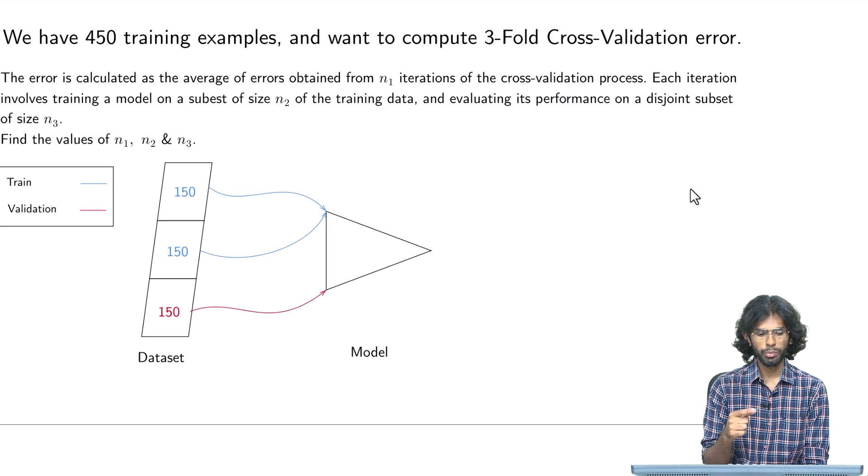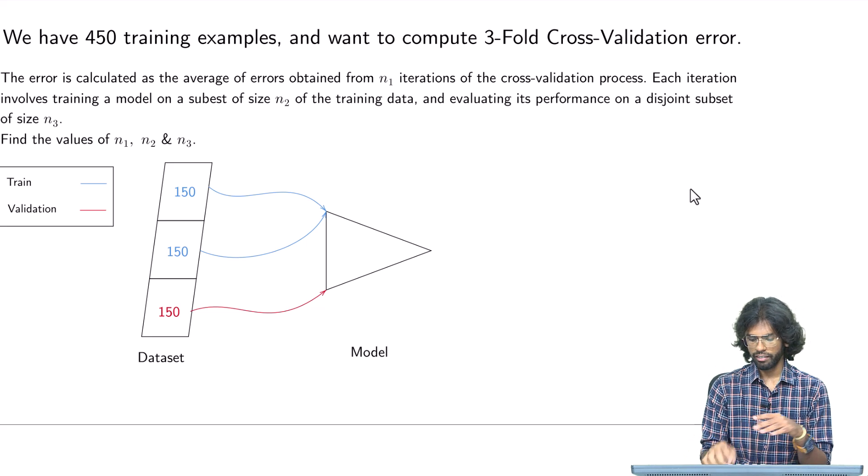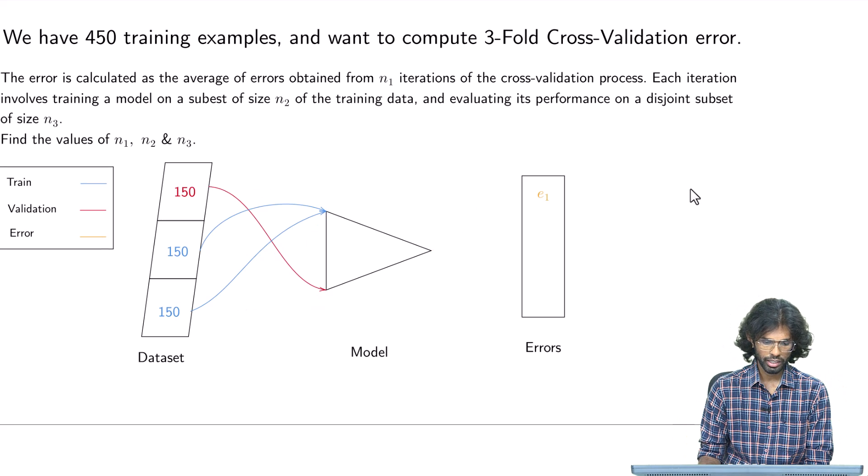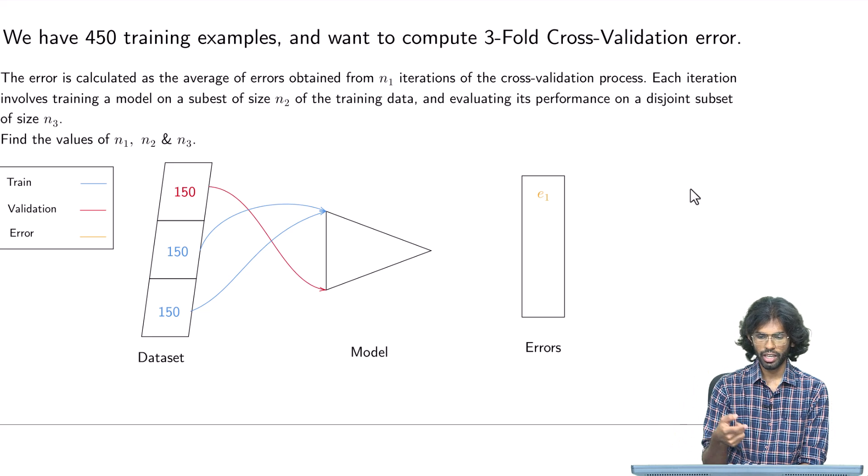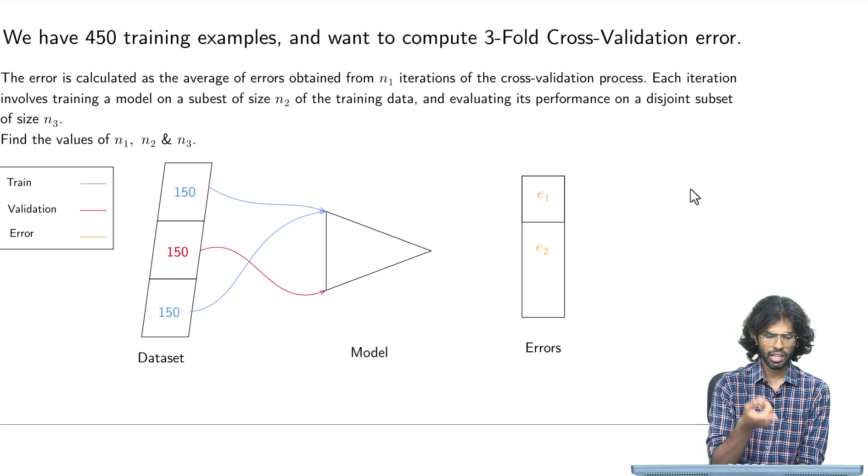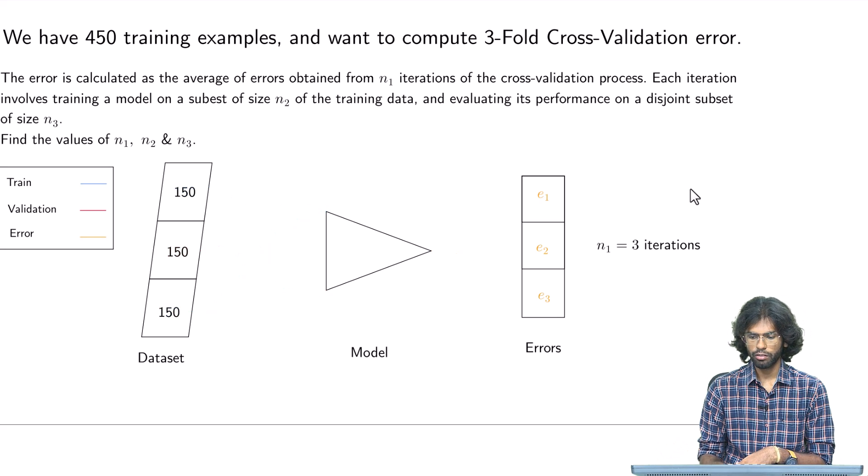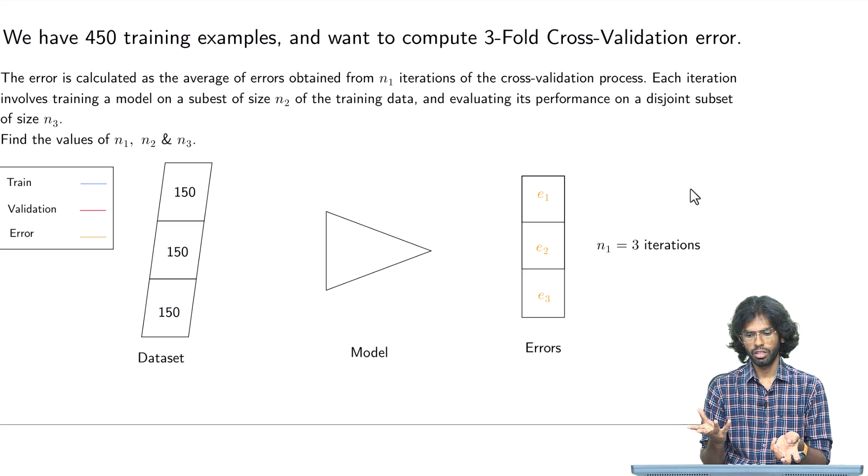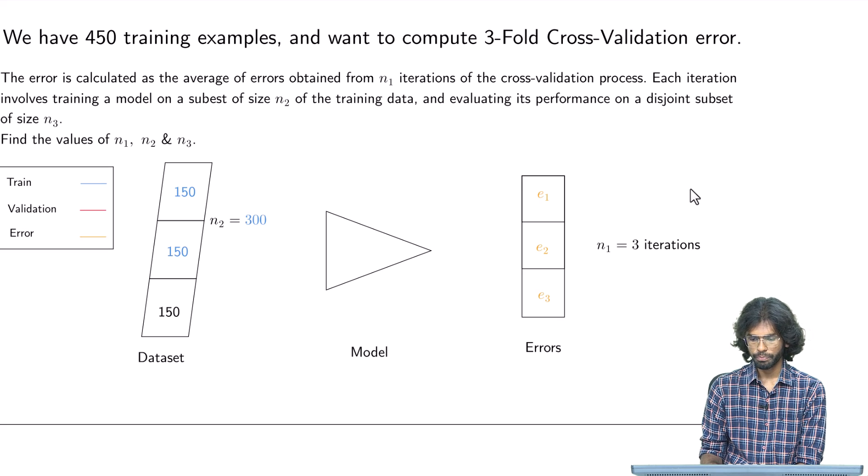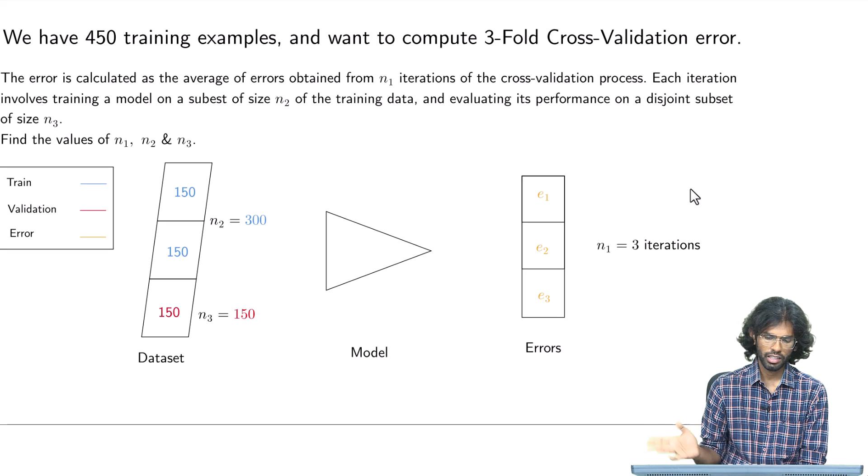We will evaluate this model and get some particular error—that is E1. Then we will change our validation set and train set. Validation becomes the first one in this case. When we evaluate this, we will get another error, E2. And thirdly, we will change our validation again, repeat the process, and get E3. We have a set of 3 errors, and the average of this error will become the error for this particular λ. We have n1, which is 3 iterations; n2 is 300, which is the size of our training set; and n3 is 150, which is the size of our test dataset.